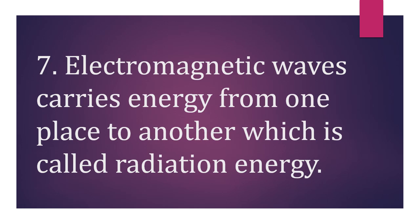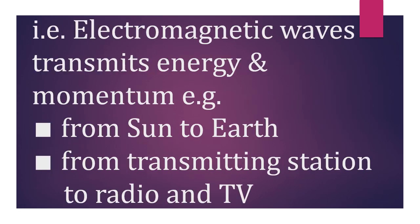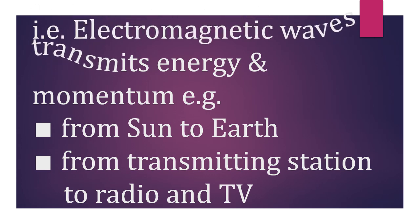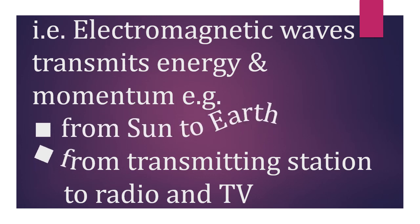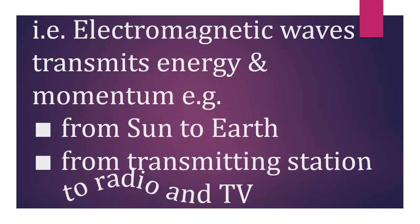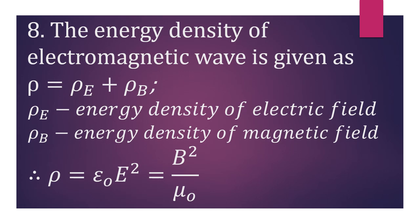Eighth: electromagnetic waves carry energy from one place to another, which is called radiation energy. That is, electromagnetic waves transmit energy and momentum — for example, they carry energy from the sun to the earth and from a transmitting station to radio and TV. The energy density of electromagnetic waves is given as ρ = ρ_E + ρ_B, where ρ_E is the energy density of the electric field and ρ_B is the energy density of the magnetic field. On substituting the values, we get ρ = ε₀E² or B²/μ₀.